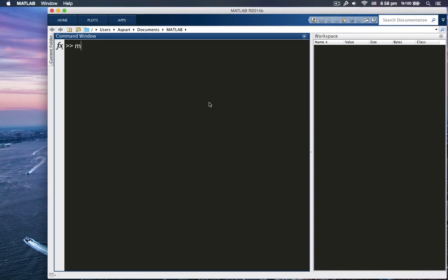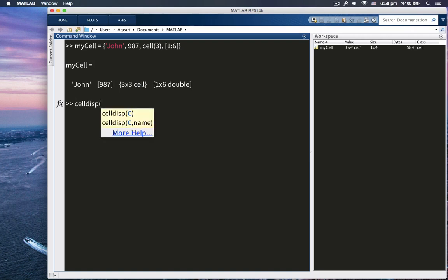This is myCell. myCell is equal to - let's say John, it's always John when it comes to strings - 987, cell 3, and the last one is an array. Okay, if you put the curly braces here, you press enter, you see the inclusions, right? This is John, this is 987 inside square brackets which is 1 by 1 matrix, and this is 1 by 6 double - doesn't show you what's inside. We can also use this function, cell display.